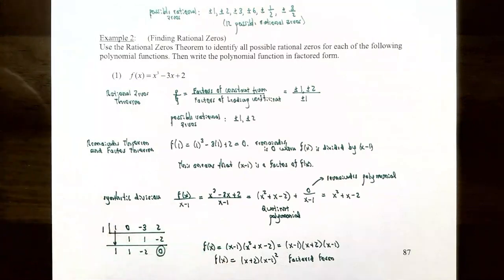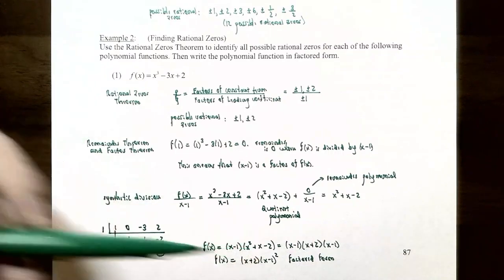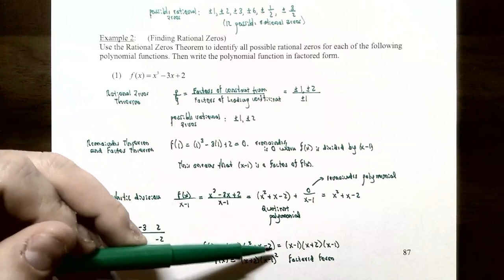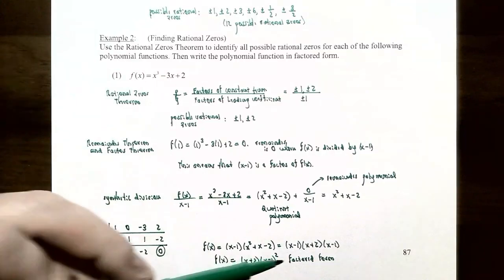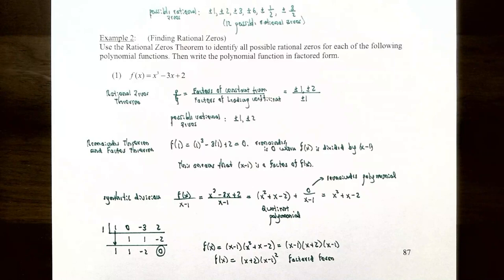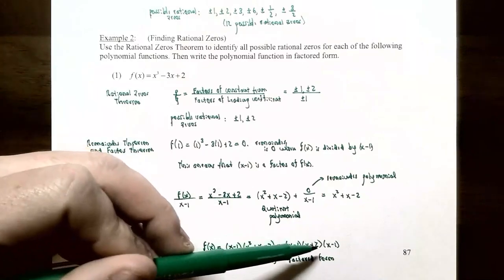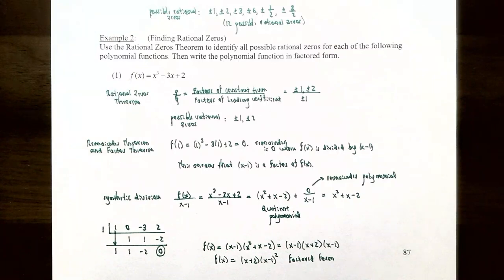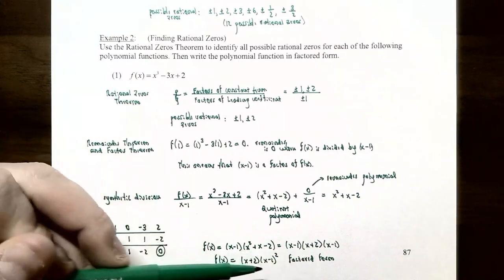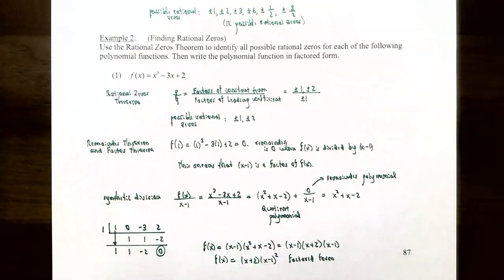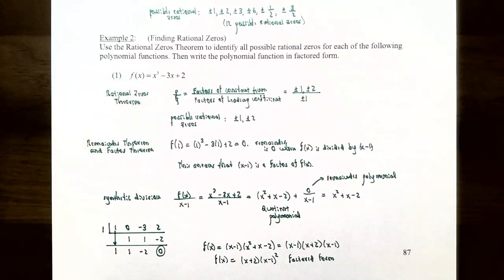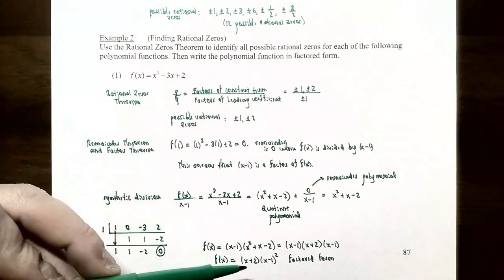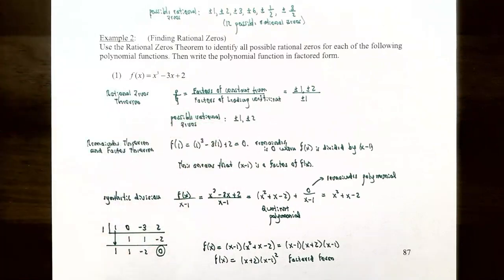The quotient x² + x − 2 is a factorable trinomial. We need two numbers that multiply to −2 and add to 1: those are +2 and −1. So x² + x − 2 = (x + 2)(x − 1). Therefore the complete factorization of f(x) is f(x) = (x + 2)(x − 1)². The real zeros are x = −2 and x = 1, both of which came from our candidates list.